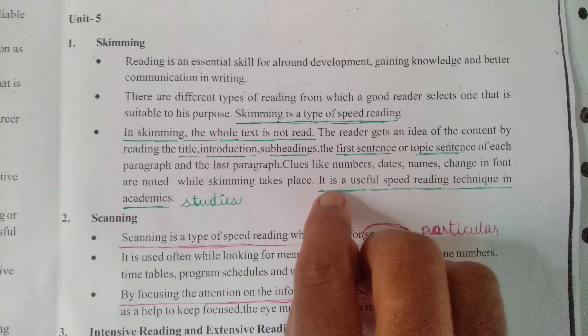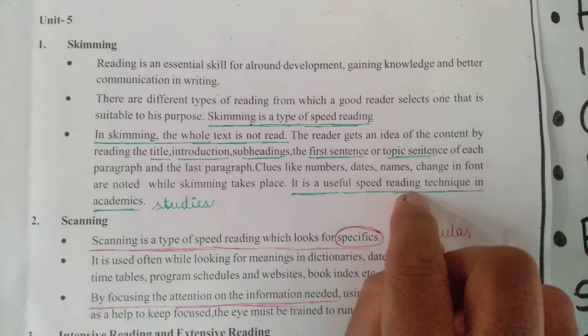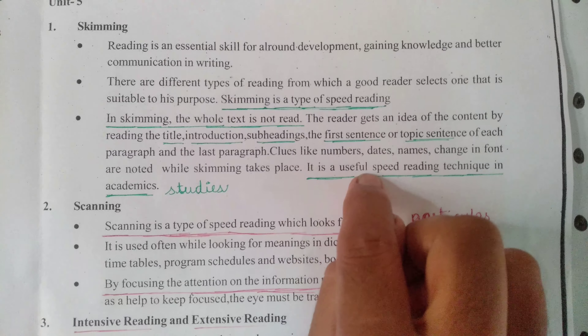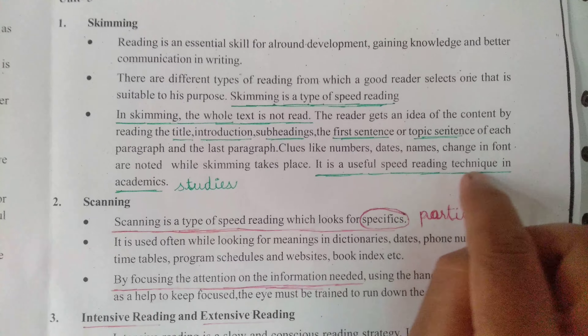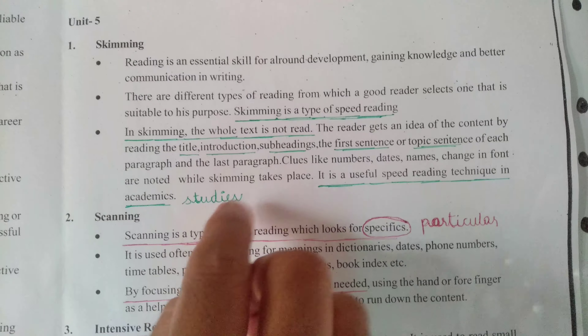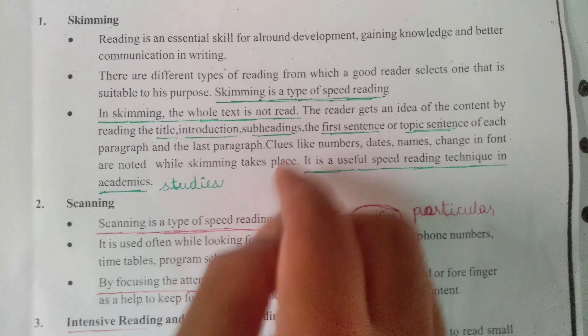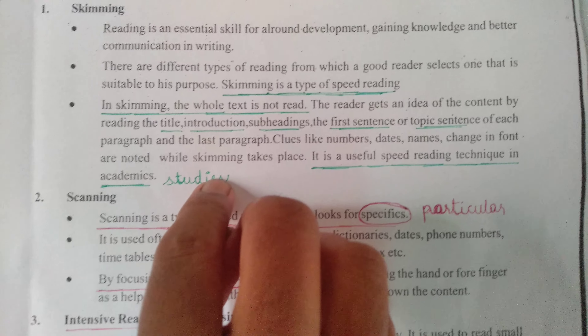In skimming, the whole text is not read. Skimming is a type of speed reading where the reader gets a general idea of the content.